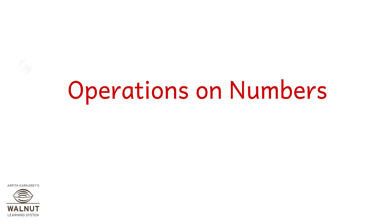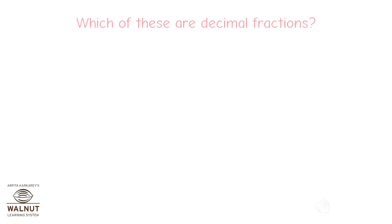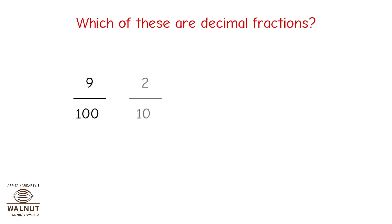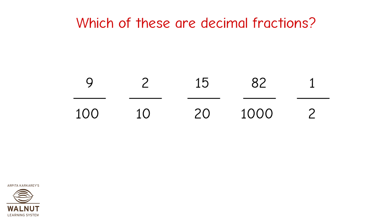Operations on Numbers: Decimal Fractions. Look at all these fractions. Which of these are decimal fractions? In decimal fractions, the denominator has to be either 10, 100, 1000, 10,000, or some such multiple of 10.